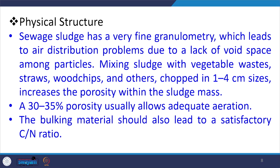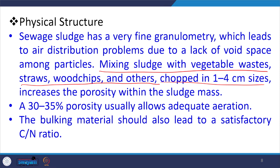The physical structure of the sludge is also important. Sewage sludge has very fine granules which lead to air distribution problems due to the lack of wide spaces among particles. Mixing sludge with vegetable waste, straws, or wood chips chopped to 1–4 mm sizes increases porosity within the sludge mass. A porosity of 30–35% is adequate for proper aeration. The bulking material should also help maintain a satisfactory C:N ratio.